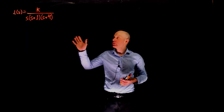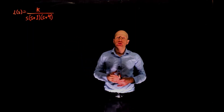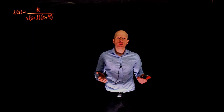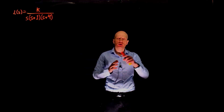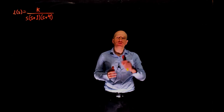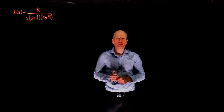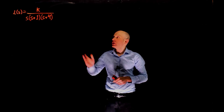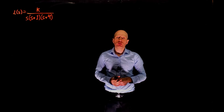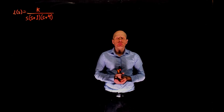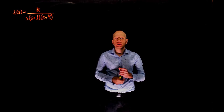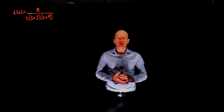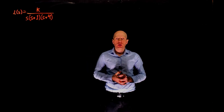In this example, we are dealing with the following open-loop transfer function. If this transfer function is to be used in a negative unit feedback loop, the question is: what is the gain margin if k equals 5? The second part of the question is: if you want to achieve a gain margin of 20 dB, determine the value of k.